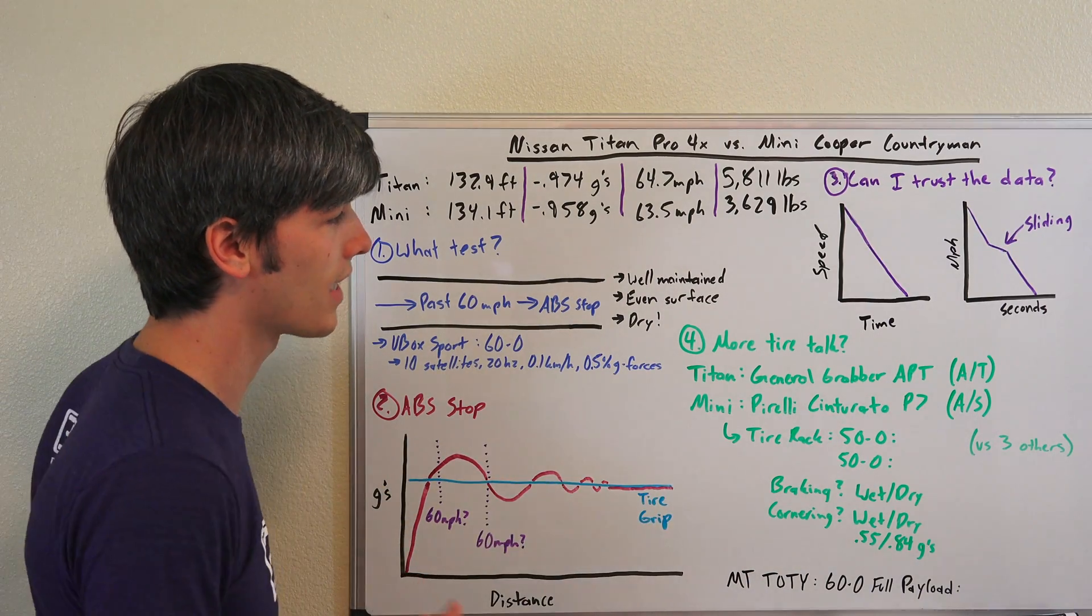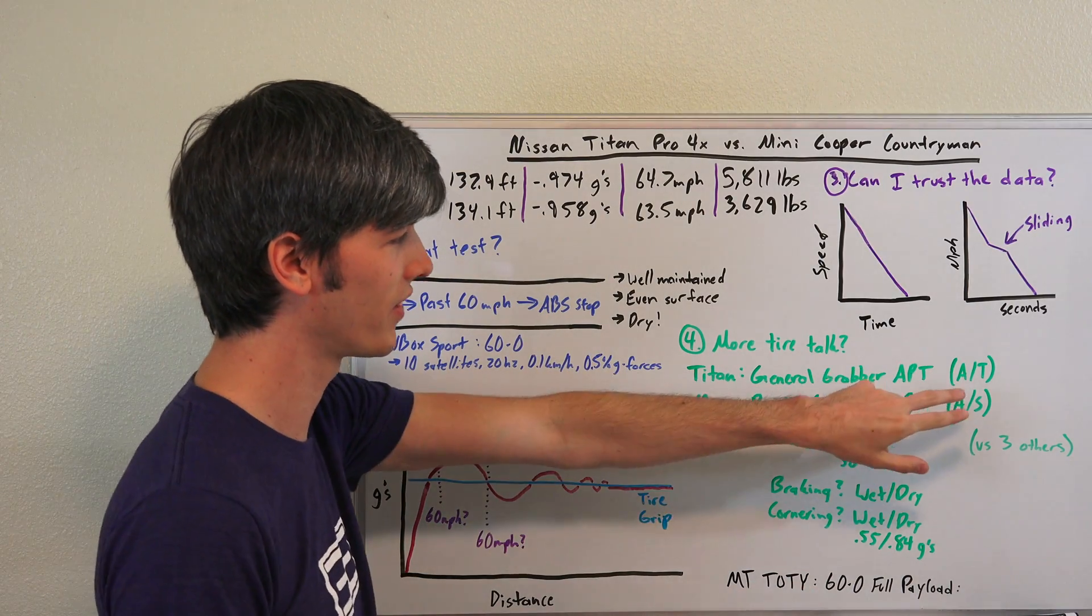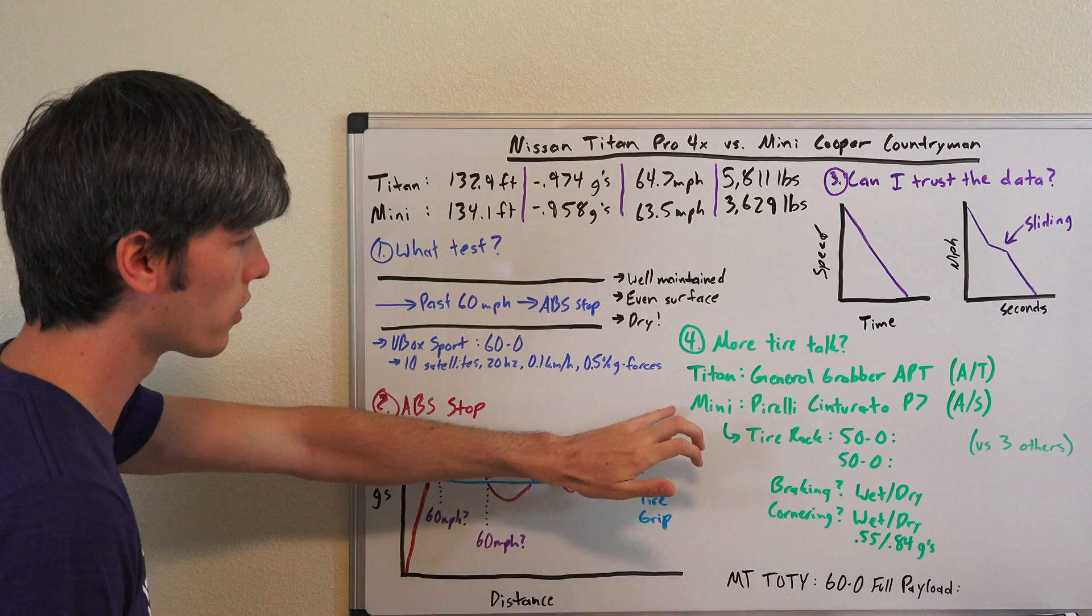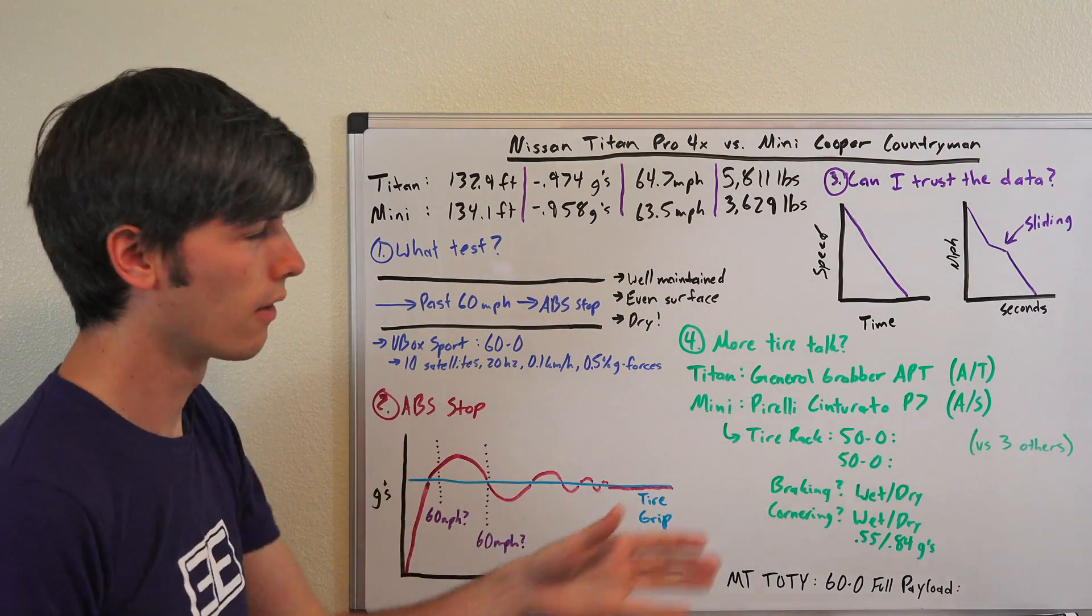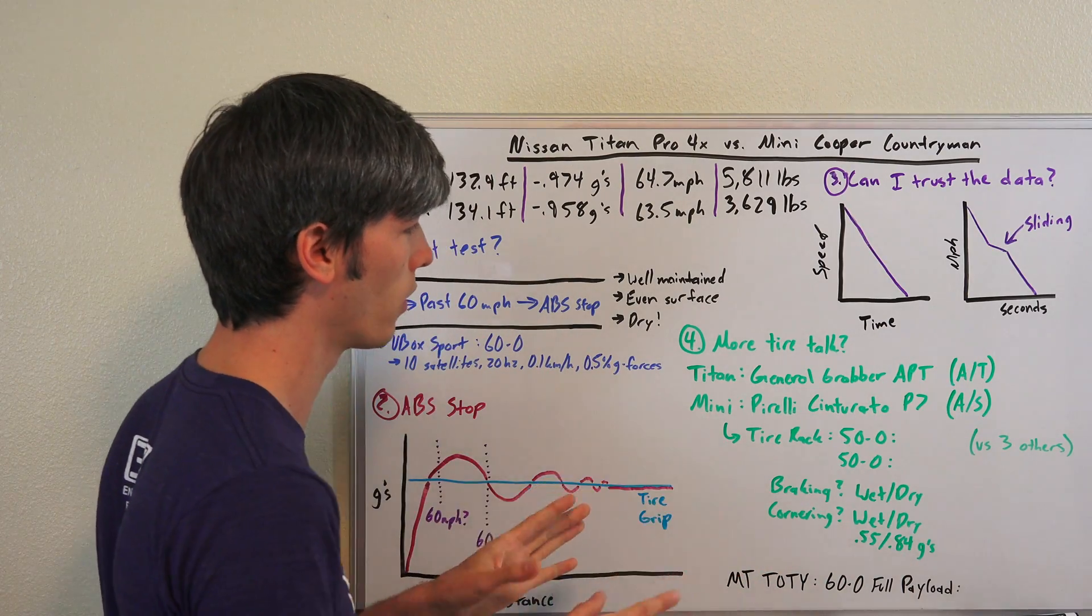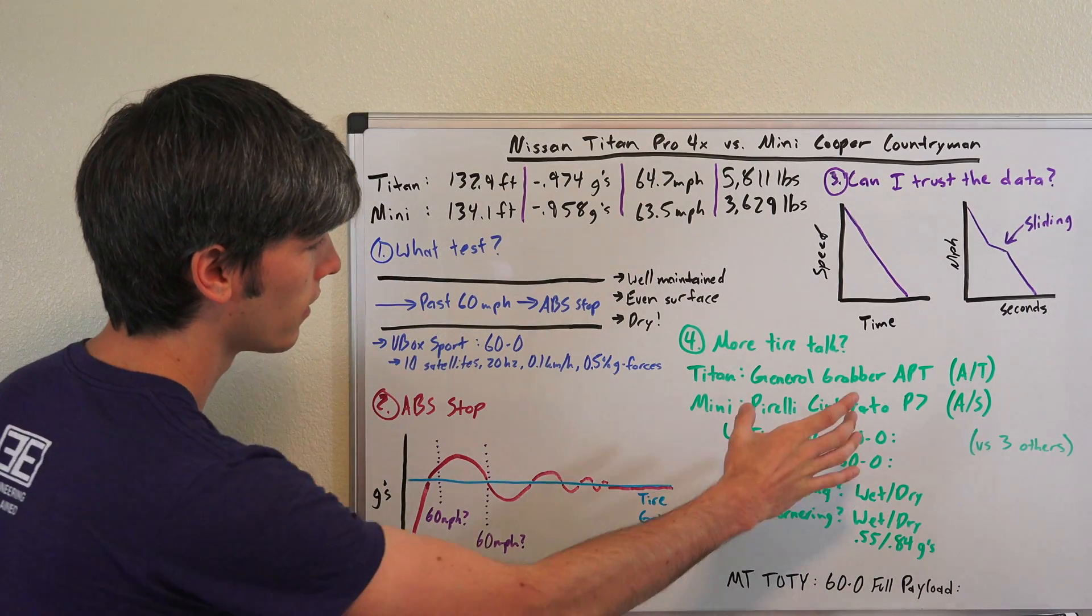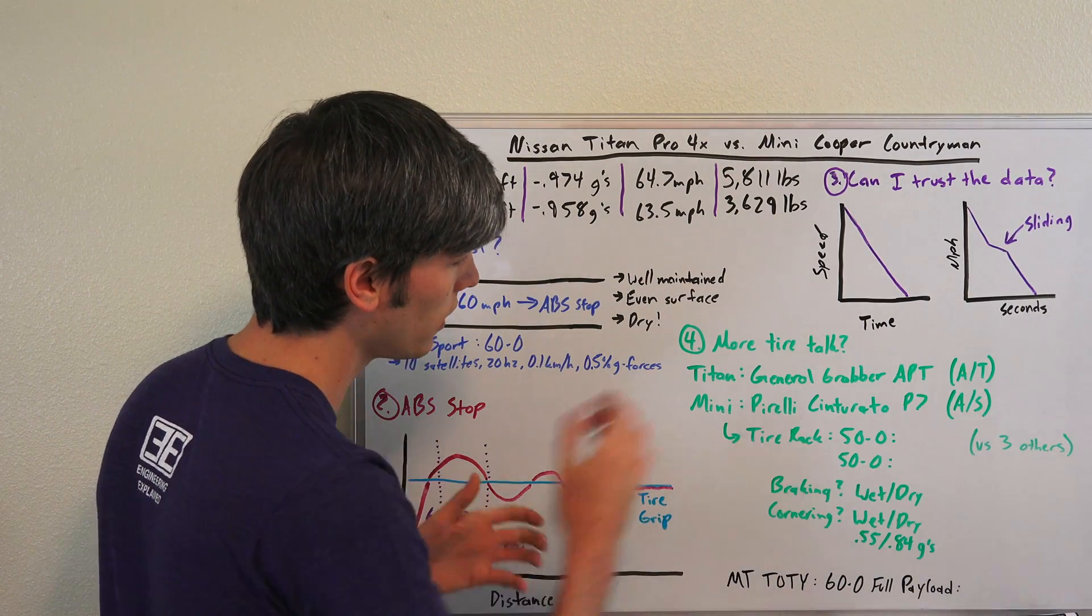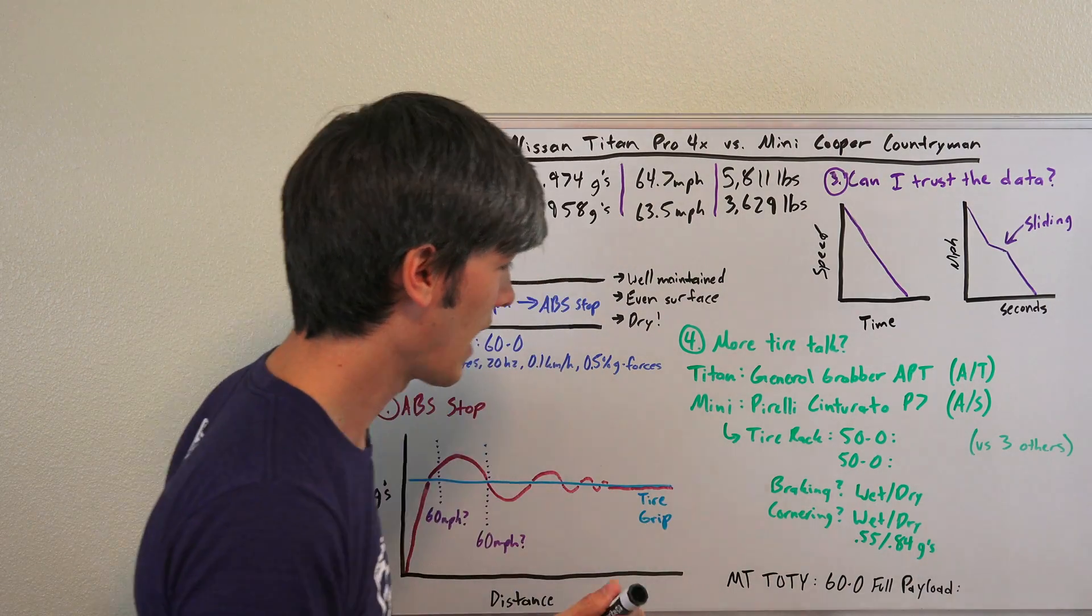I did some off-road testing. The Nissan Titan absolutely destroyed the Mini off-road, something like 10 feet quicker from 20 miles per hour, not 60 miles per hour. It was a huge difference off-road.